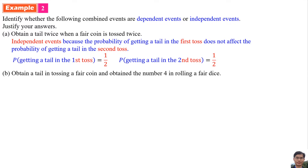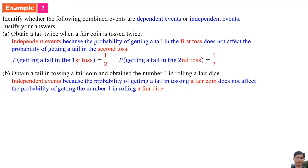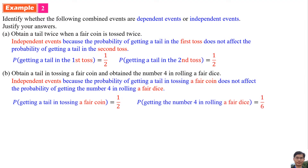Part b: Obtaining a tail when tossing a fair coin once and obtaining the number 4 when rolling a fair dice. They are Independent Events because the probability of getting a tail in the toss does not affect the probability of getting a number 4 in rolling the fair dice. The probability of getting a tail is 1 over 2, and the probability of getting the number 4 is 1 over 6, because there are 6 numbers in a dice and only one number 4.